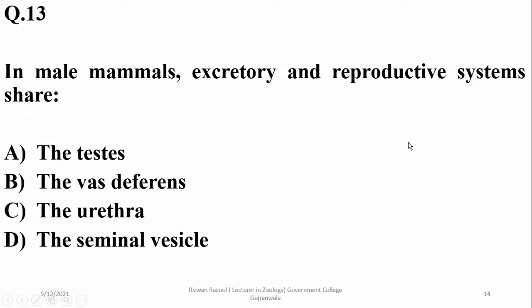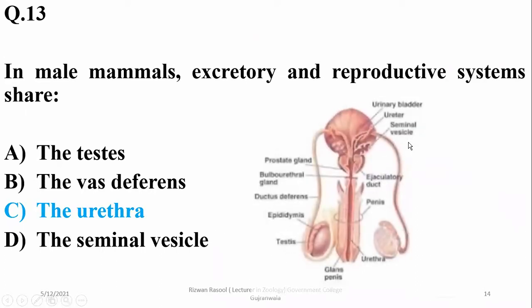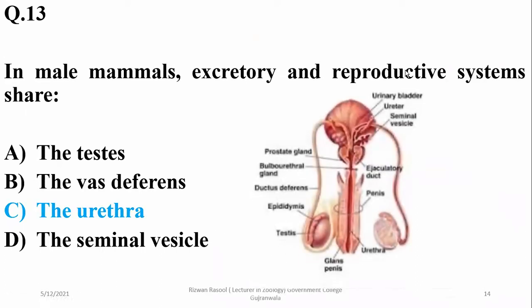Question number thirteen: in males, the excretory and reproductive systems share the urethra, which is why it is known as the urinogenital duct or urethra.